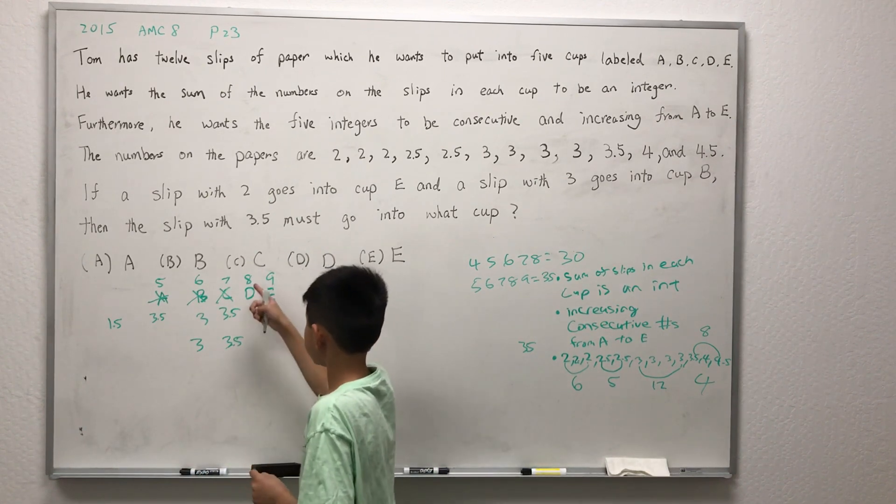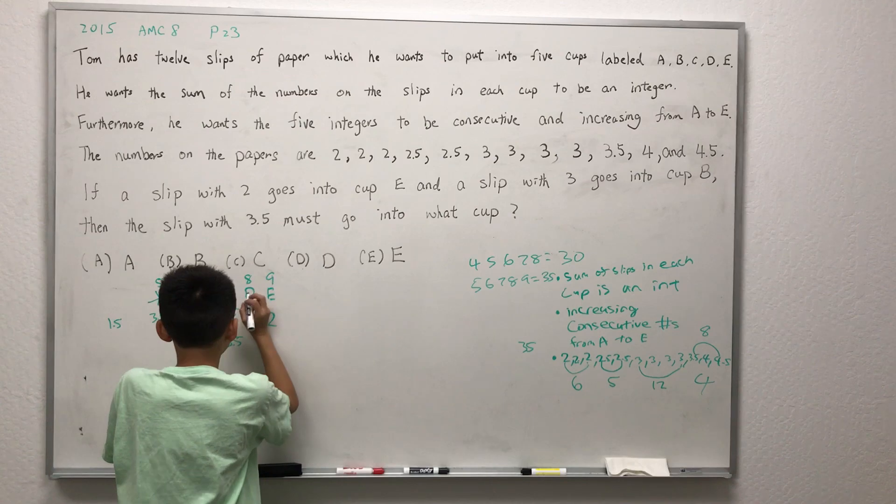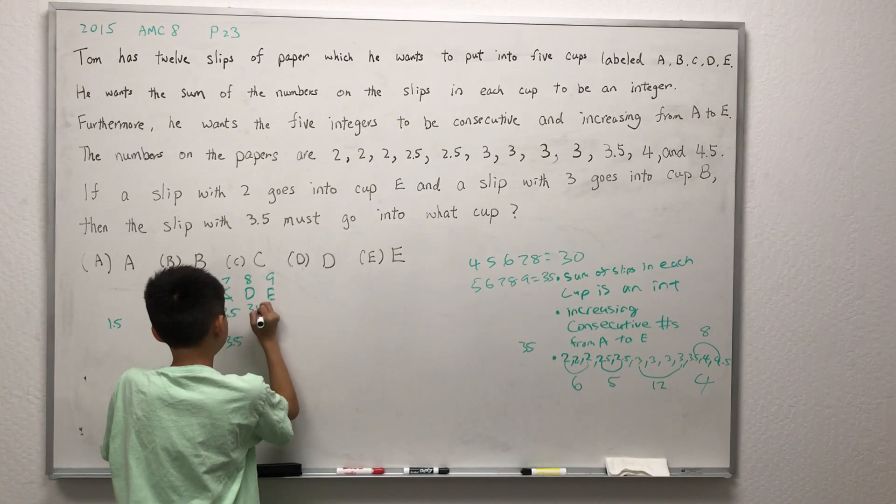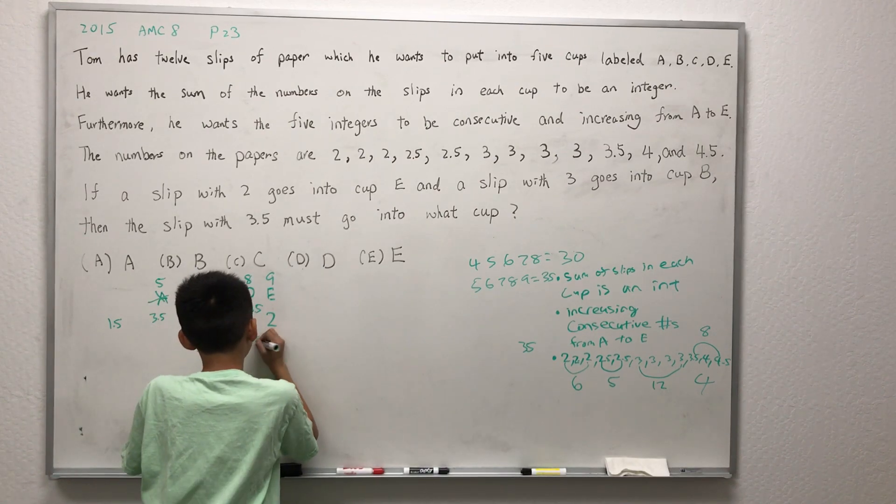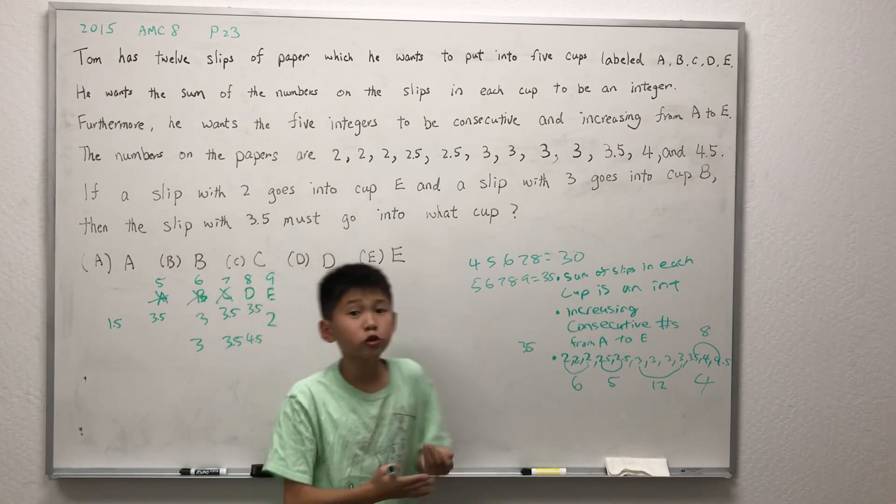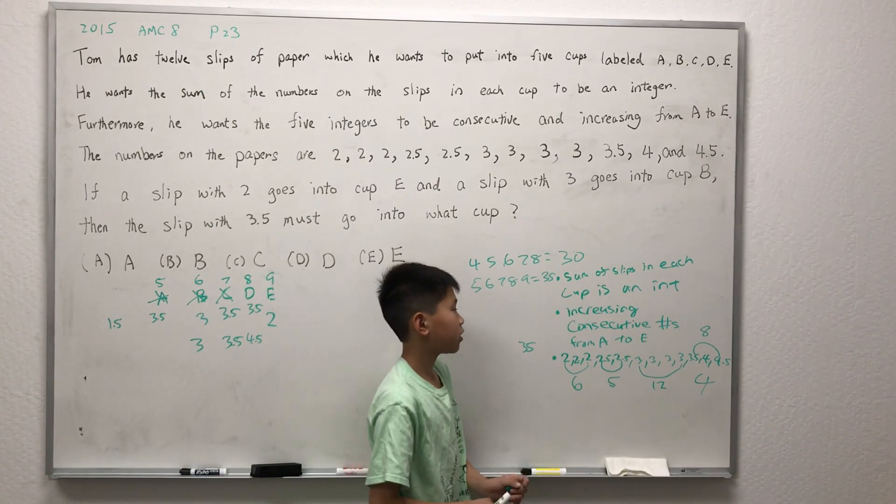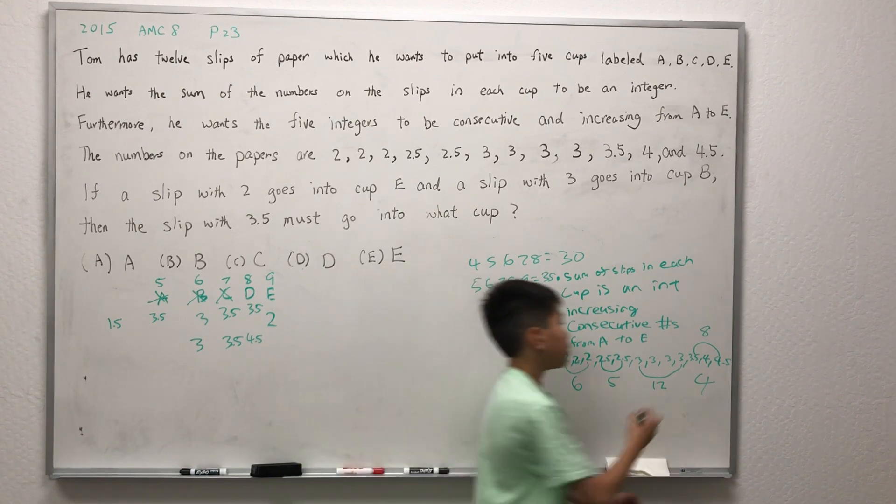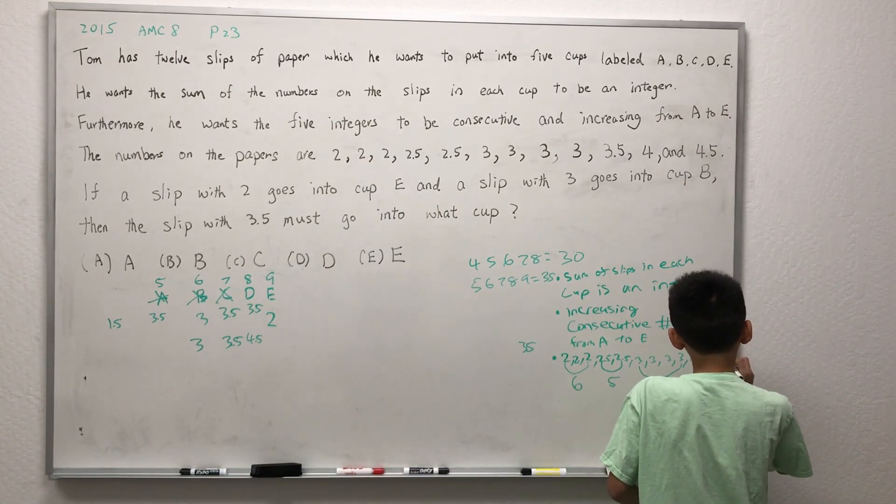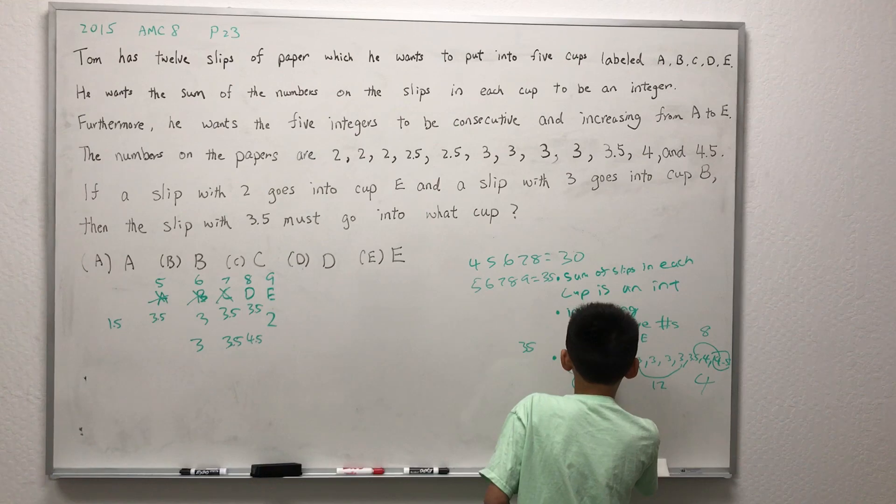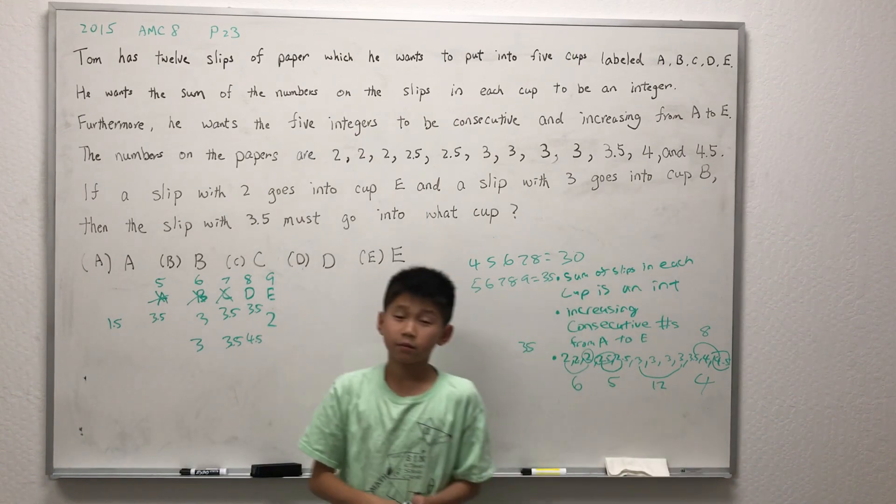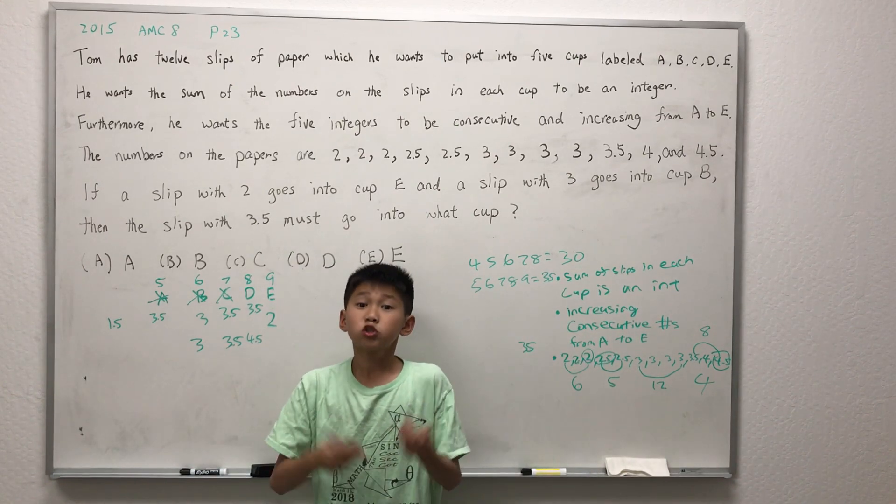Let's try D, which is a total of 8. When we plug in 3.5, we get 4.5 remaining. There are multiple ways we can make 4.5 from the remaining slips of paper, excluding 3.5. We can simply have one sheet of paper which is 4.5, or we can have a 2 and a 2.5, which will also add up to 4.5. So D works out.